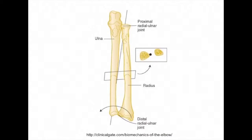In this picture, we can see how the ulna and the radius fit together to make our forearm. Here we can see the proximal radial-ulnar joint, and distally, we can see the distal radial-ulnar joint. We will now look at each of these bones individually and discuss their structures.